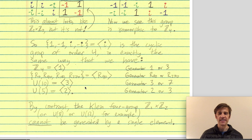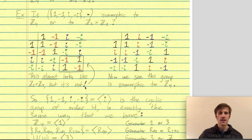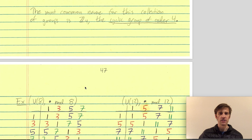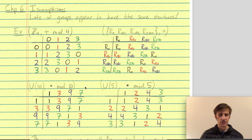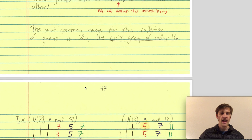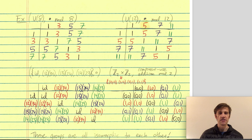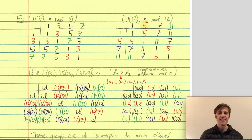To recap the main point of this mini lecture: isomorphisms are a way to say that two groups have the same structure. You can see from the color-coded multiplication tables that one set of four groups all share the same structure and are isomorphic to Z mod 4, while another set of four groups are all isomorphic to each other but represent a different isomorphism type — Z2 cross Z2. In the next mini lecture we'll define isomorphisms rigorously to get practice with the definition.